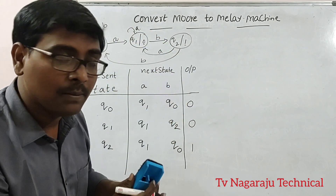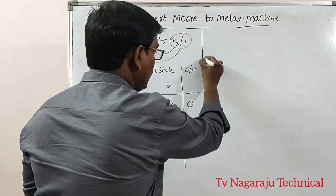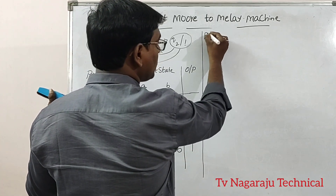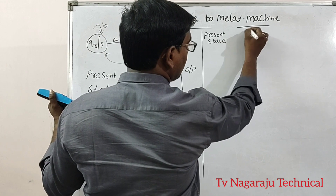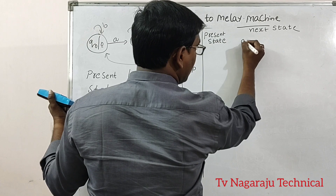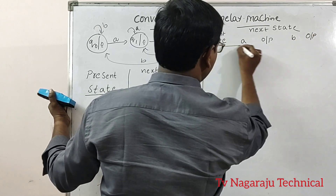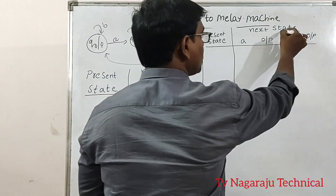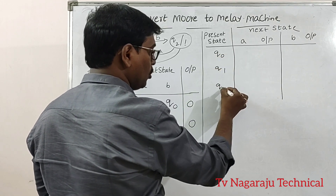Before converting into the Mealy machine, I construct the transition table. For the Mealy machine, the transition table has: present state, next state for input A with output, and next state for input B with output. The output depends on the state along with the inputs. The states are Q0, Q1, Q2.